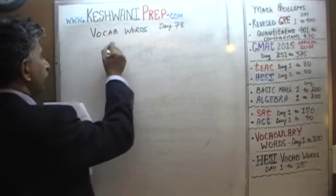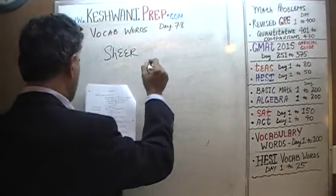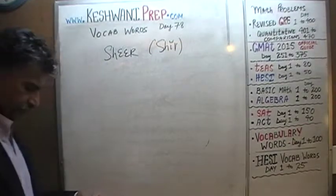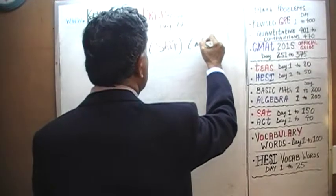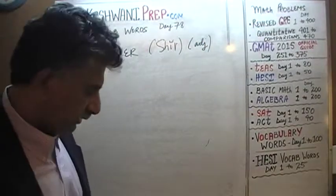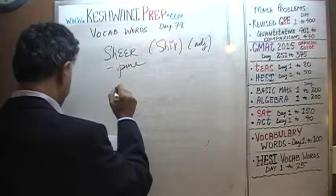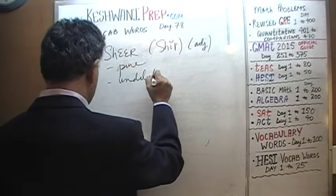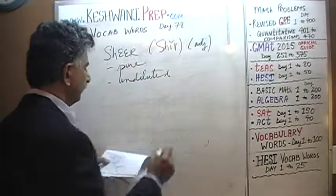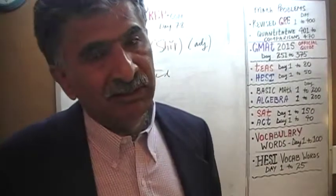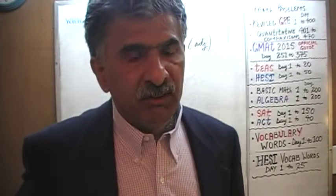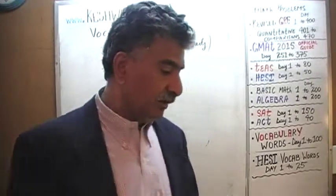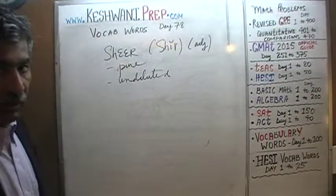We are not in a hurry. The next word we want to learn is sheer. It's an adjective. Sheer means pure, undiluted. If you dilute something, it's no longer strong or pure. If you have milk and add a glass of water, it's diluted — it's no longer pure milk.